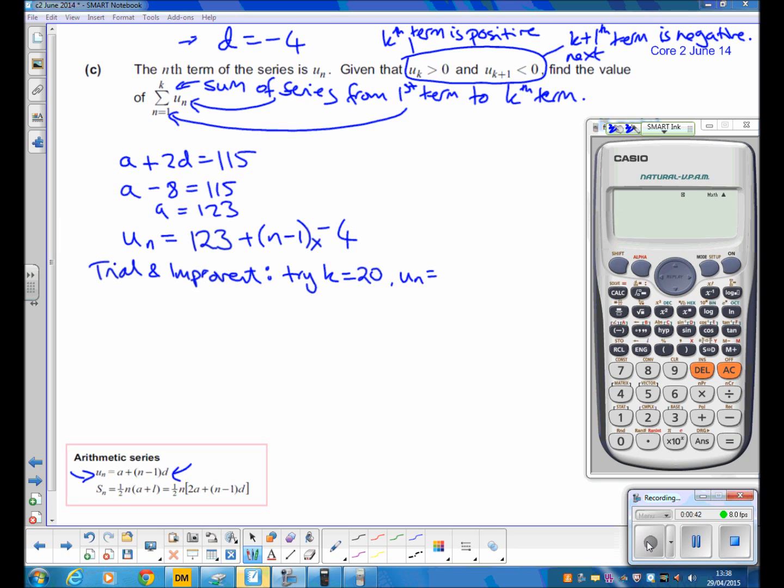When k is 20, what is the nth term? So 123 plus n-1 times negative 4, and we get 47, so it's still a positive number. Now you wouldn't have to show all of these and write them down, you just have to write the key ones down.